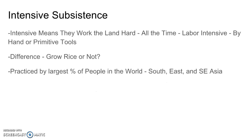Next is intensive subsistence agriculture — farming for the farmer to consume. Intensive means they work the land really hard all the time; it's very labor-intensive, requiring a lot of manpower, usually done by hand or with primitive tools. The key distinction in intensive subsistence is whether they grow rice or not. It's practiced by the largest percentage of people in the world because it's the primary type of agriculture in South Asia, East Asia, and Southeast Asia — including India, China, Cambodia, Laos, Vietnam, Thailand, Indonesia, and the Philippines.